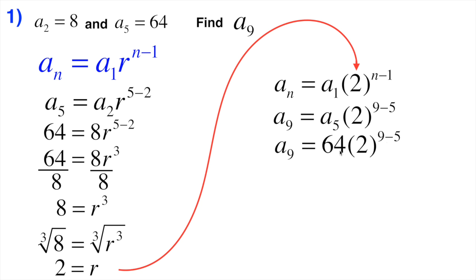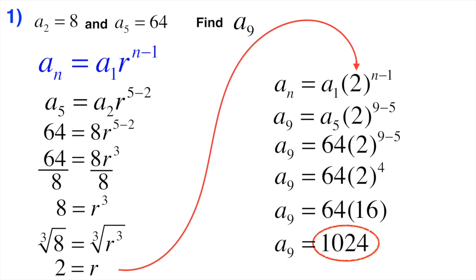Okay, now I'm going to simplify. Now if you wanted to, technically speaking, you could just plug in what's on the right-hand side into your calculator, and that would spit out the answer for you, and that would be nice. If you want to do it a little bit longer by hand, that's fine. 9 minus 5 is 4. 64 times 2 to the 4th. Remember, using our order of operations, we have to do 2 to the 4th first. Well, 2 to the 4th is 16, and 64 times 16 is 1024.